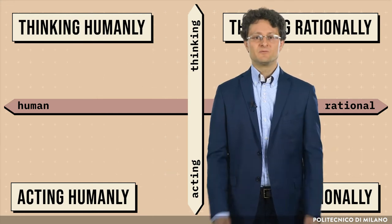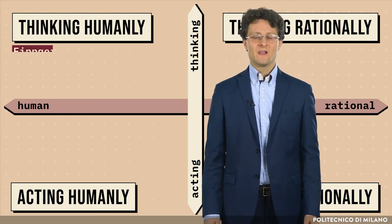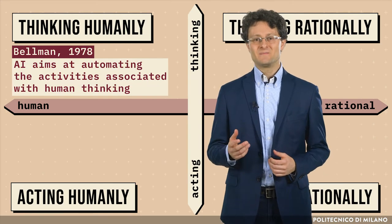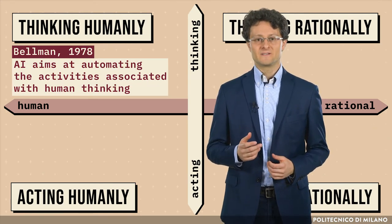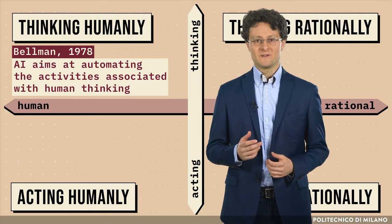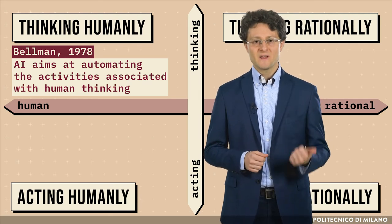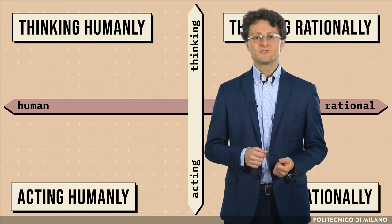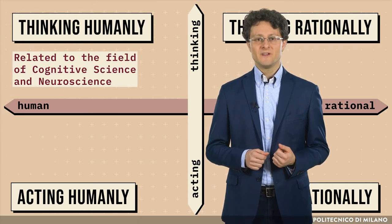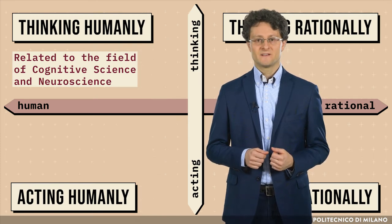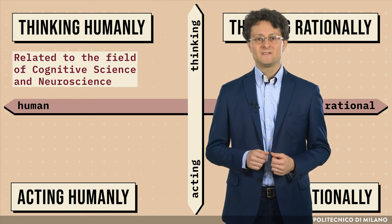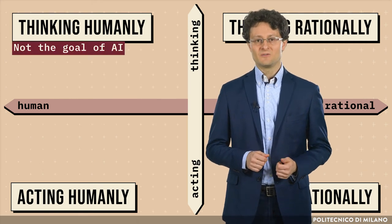Thinking humanly is well described by the definition of Bellman in 1978, in which AI aims at automating the activities associated with human thinking, such as decision-making, problem-solving, and learning. This notion is currently related to the fields known as cognitive science and neuroscience, and replicating the processes under thinking humanly is not the goal of AI.